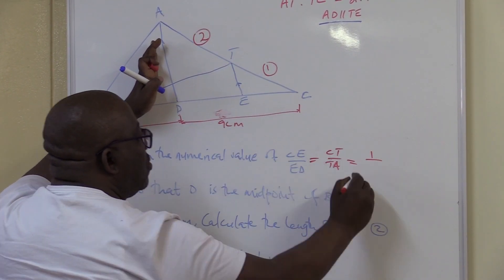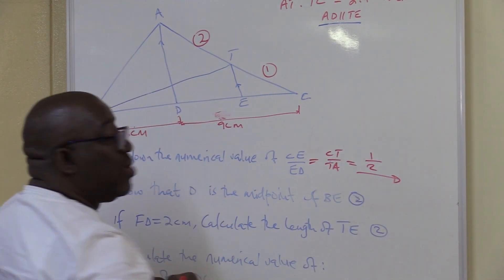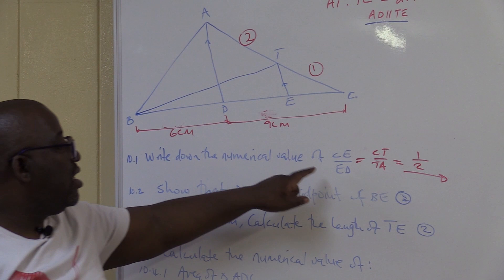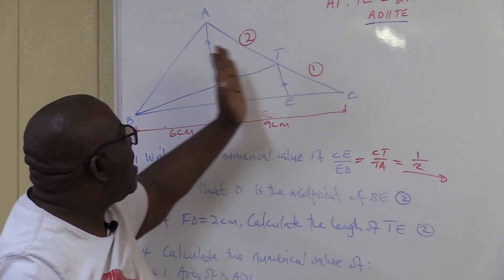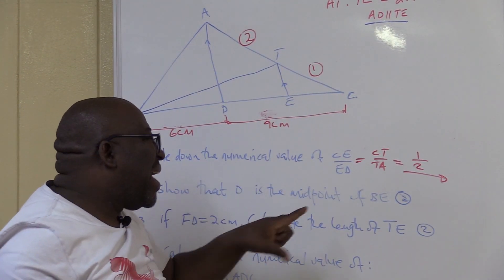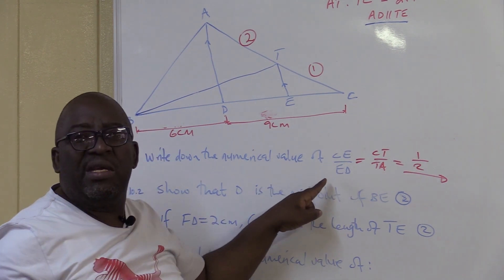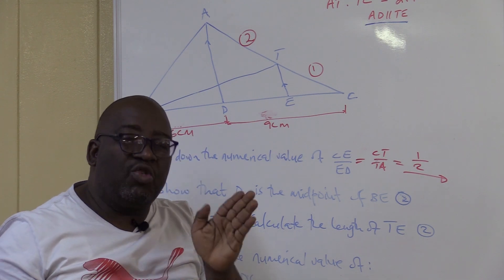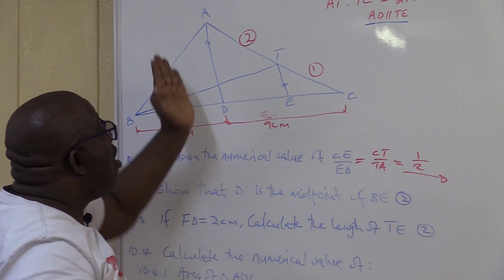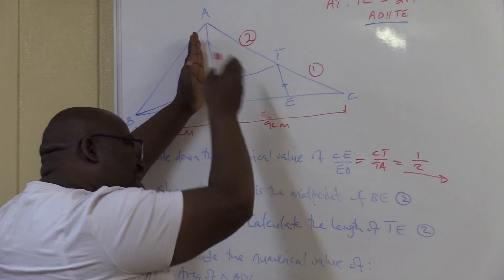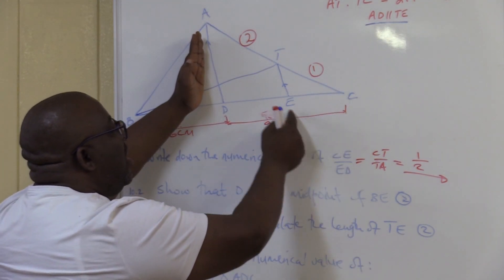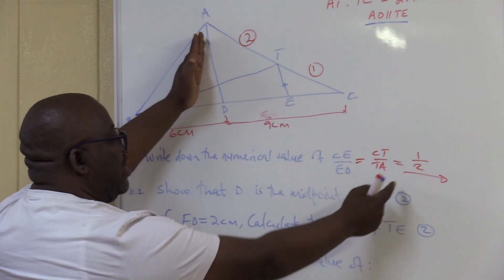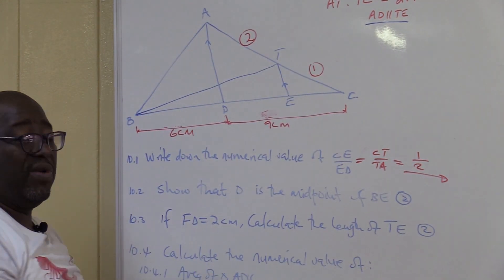What do you see in TA? I see two. I'm done. This is what is required just for one mark. The key was the parallel lines — a line drawn parallel to one side of a triangle divides the other two sides proportionally. We're checking the theorem. If CE over ED equals CT over TA, you write what you see there: one over two.